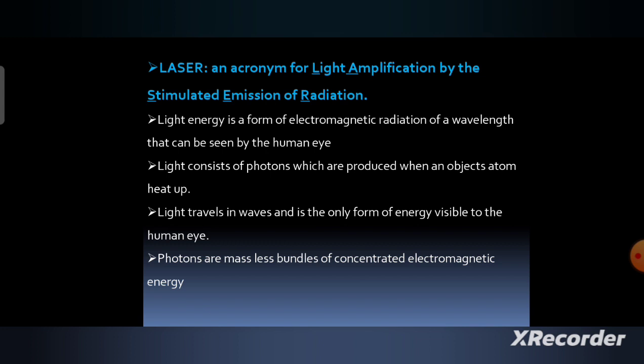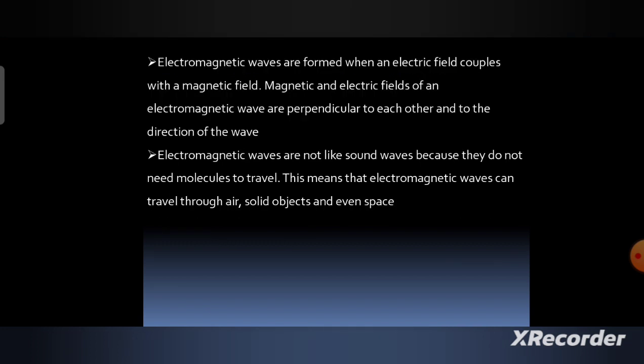Light travels in waves and is the only form of energy visible to the human eye. Photons are massless bundles of concentrated electromagnetic energy. Electromagnetic waves are formed when an electric field couples with a magnetic field. The magnetic and electric fields of electromagnetic waves are perpendicular to each other and to the direction of the wave. Electromagnetic waves are not like sound waves because they do not need molecules to travel. This means that electromagnetic waves can travel through air, solid objects, and even space.